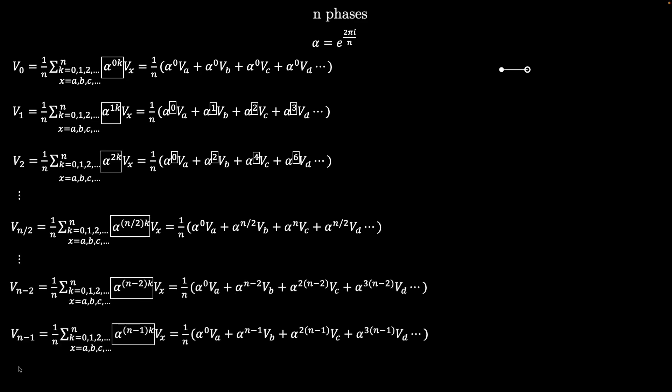If the number of phases are even, then there will be a middle component halfway down the list that gives a set of bipolar phasors, like what was shown in the two- and four-phase cases. All of the components before the middle measure different rates of positive rotation, and the components after the middle measure different rates of negative rotation. The types of rotation become very interesting as the number of phases increases.